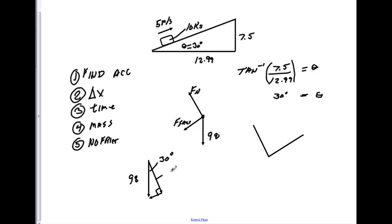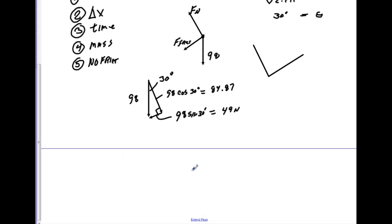So we know that this is 98 newtons. So this one would just be 98 times the cosine of 30 degrees. I believe when you do that, you're going to get 84.87. Now this one here would be 98 times the sine of 30, and that would give me 49 newtons. So let's go ahead and draw our new free body diagram.